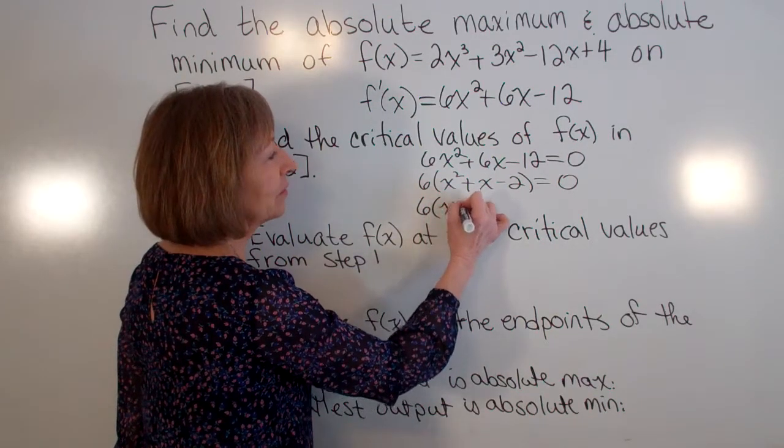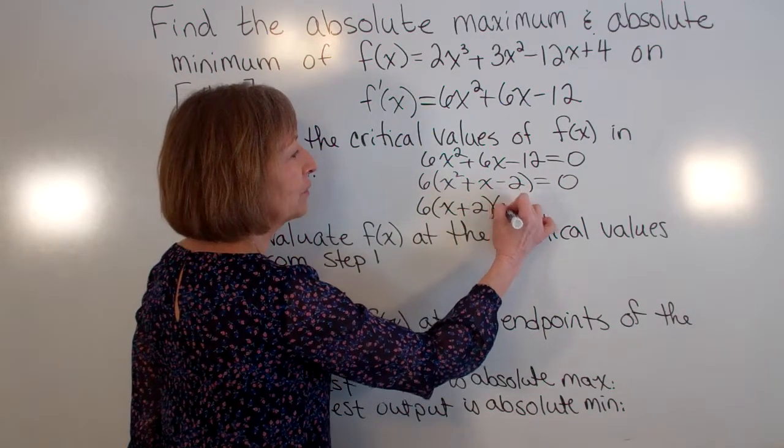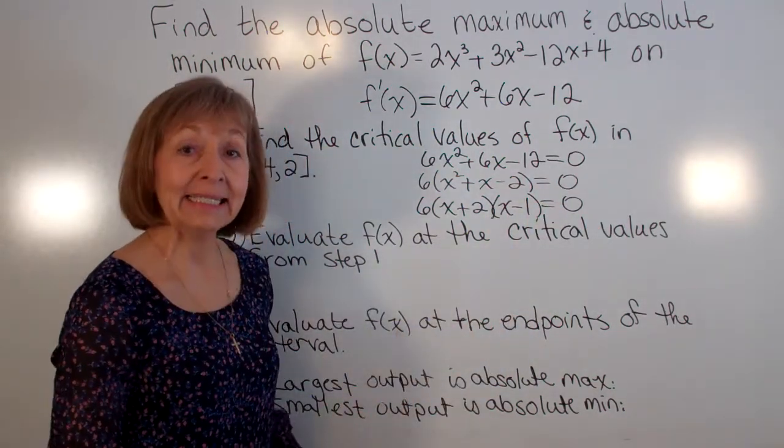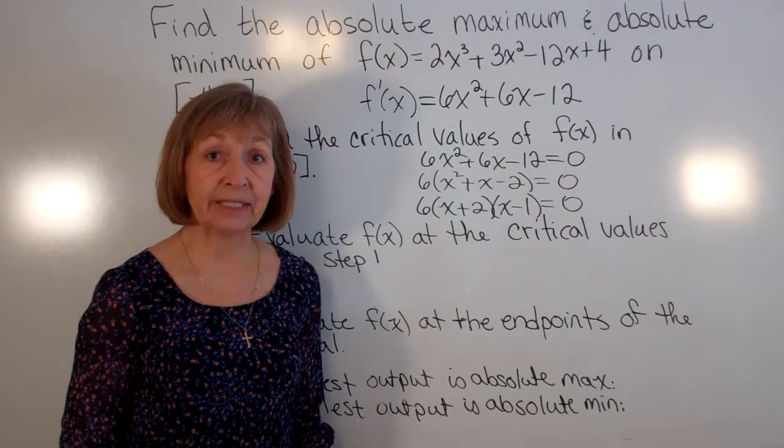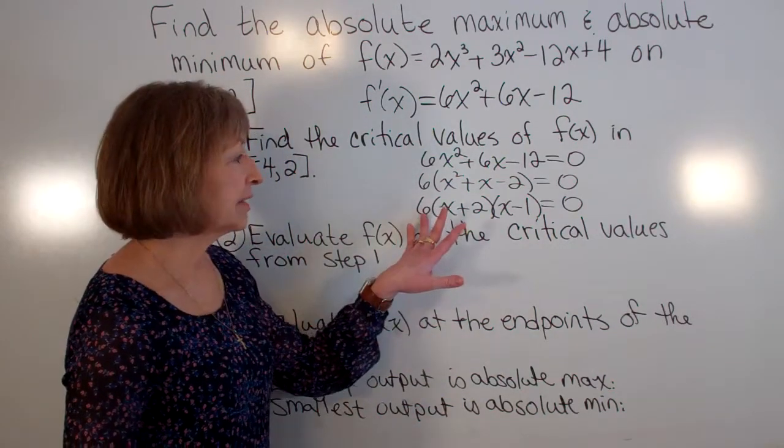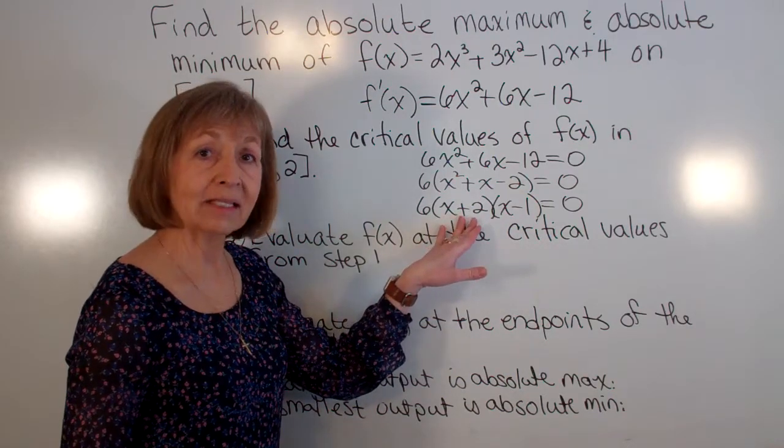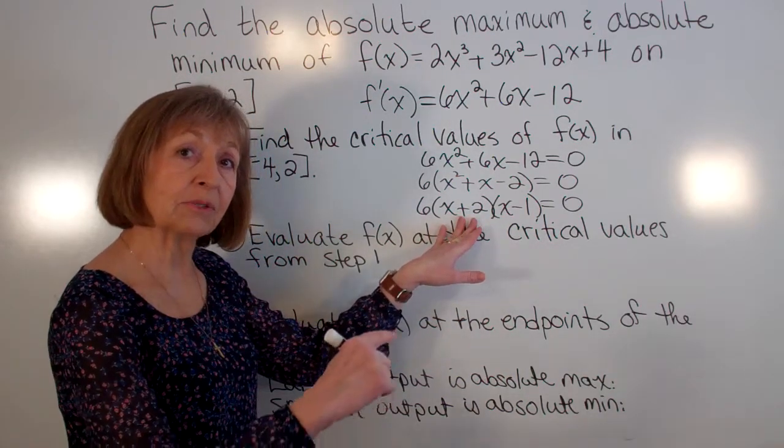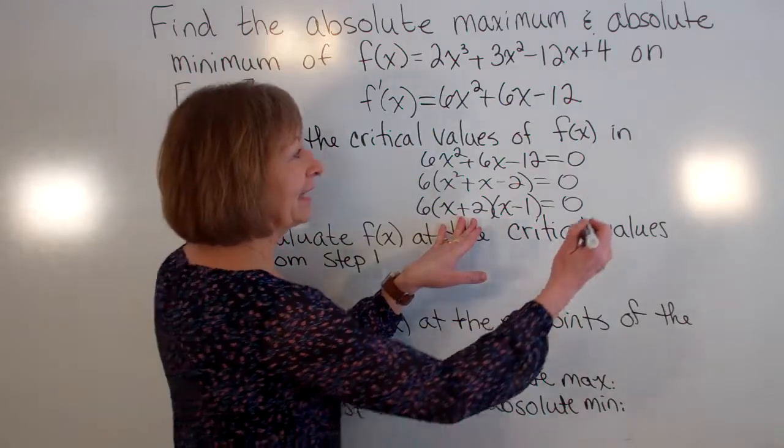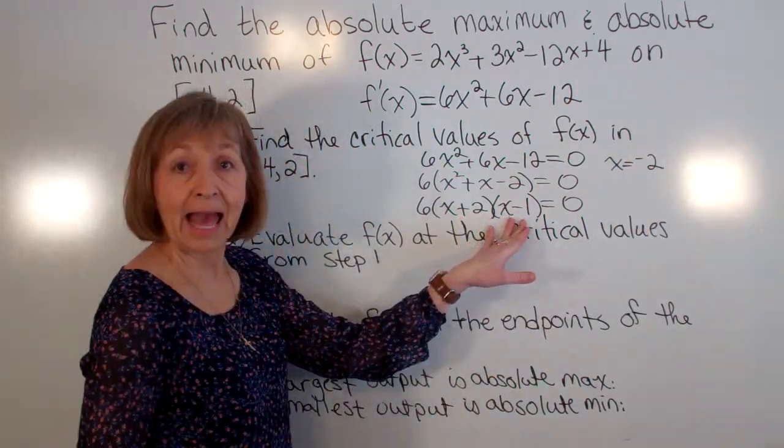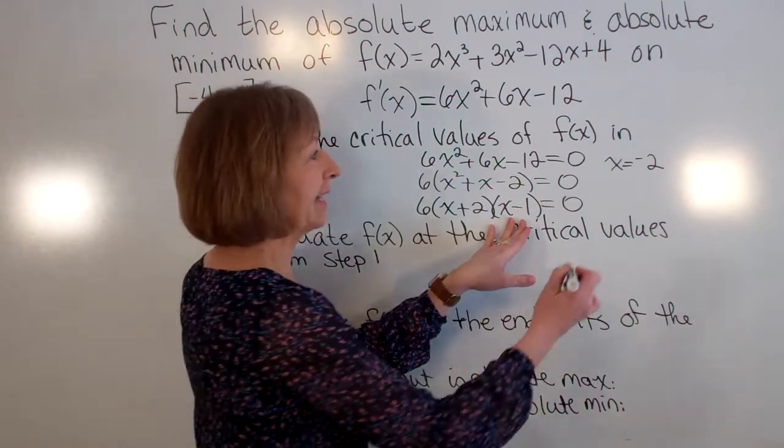Factoring x² + x - 2. Well that's 6(x + 2)(x - 1). And then setting each factor that has a variable in it equal to zero. Well 6 doesn't have a variable in it so I'm not going to set that equal to zero. x + 2 = 0, subtract the two over, I get x = -2. And then add the 1 to both sides, I get x = 1.